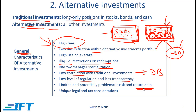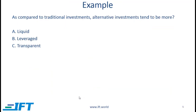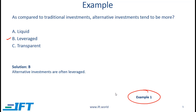There is limited and potentially problematic risk and return data. When you look at hedge fund indices or private equity indices, the risk and return data will have biases. The return data will probably be upward biased because the data reported to the index creator is based on what the constituents report. Finally, there are unique legal and tax considerations associated with alternative investments. As long as you have memorized this list, you'll be in reasonable shape. Here is a possible exam question — if you were careful about the list, you would recognize the correct answer is B. Also, take a look at Example 1 in the curriculum.